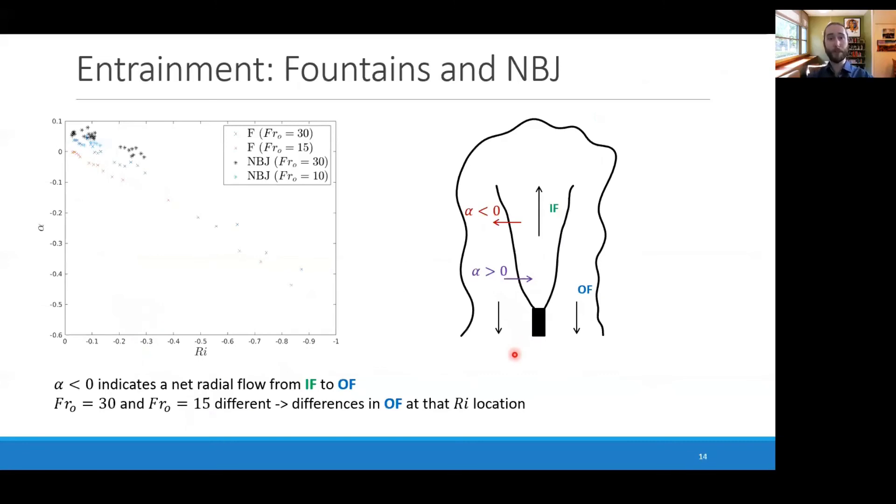We've done so here, where this plot shows entrainment for a Froude number 15 and 30 fountains shown in the red and blue crosses respectively. We see that the alpha is negative for the majority of the height, except for a small region near the source. That is, for the vast majority of the height, the radial flow at this boundary is from the inner flow to the outer flow, whereas near the source in the alpha positive region, we see from the outer flow to the inner flow. Another key observation here is that entrainment is consistently lower in the Froude number 15 fountain than the Froude number 30. This is quite different to the negatively buoyant jet case, where we saw that the Froude number of 10 and 30 had quite similar entrainment coefficients.